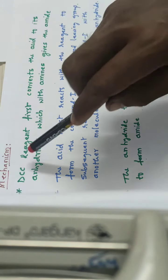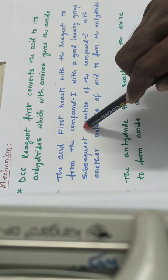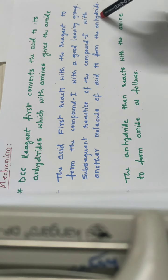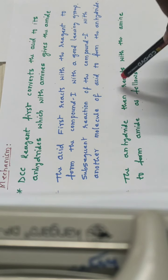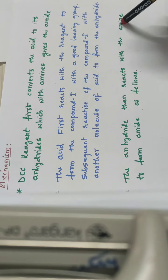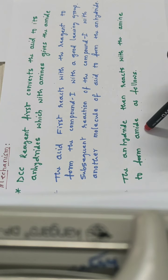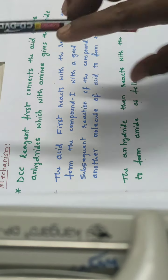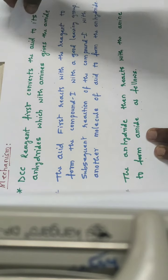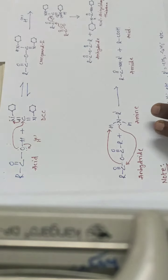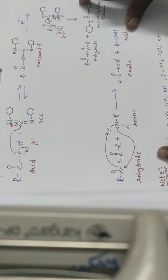So DCC converts two carboxylic acid molecules into an anhydride. That anhydride then reacts with amines to give the desired compound, amide. This is the explanation, and we are going to see the mechanism in detail.